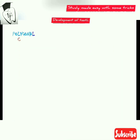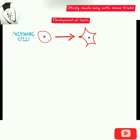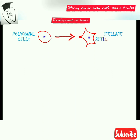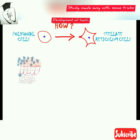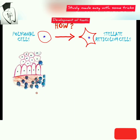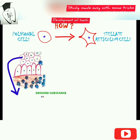What has changed from the bud stage to the cap stage? The first change is that the polygonal cells are changed into the stellate reticulum cells. But how does this happen? It is because the enamel organ contains glycosaminoglycans in the ground substance.